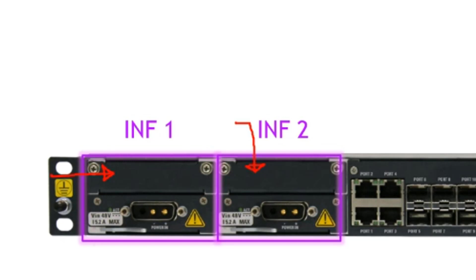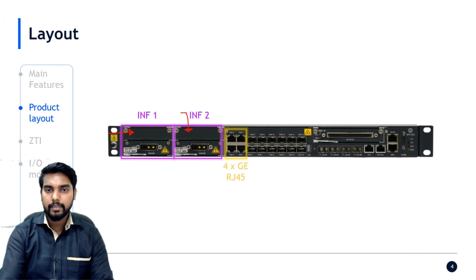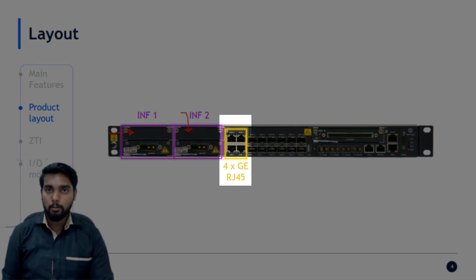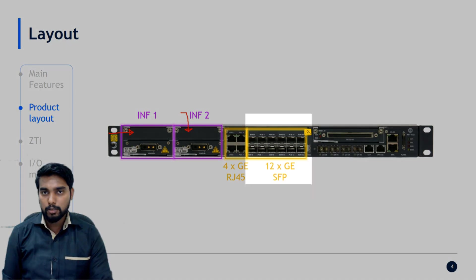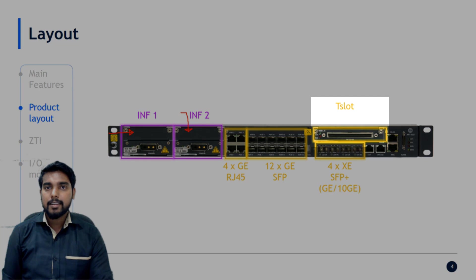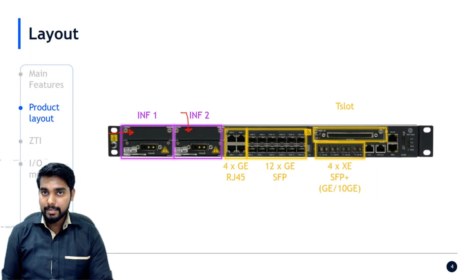The NPT 1022 supports AC adapters in a redundant manner, and these AC adapters are bigger than the DC ones. You can have two AC adapters at the same time. The NPT 1022 has four Fast Ethernet 1 gig ports highlighted in yellow, 12 optical ports of 1 gig each, and four 10 gig optical ports. There is also a traffic slot where multiple traffic slot cards can be inserted.